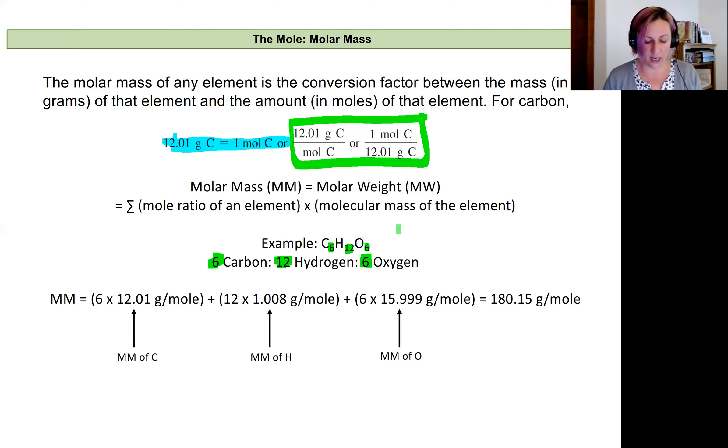So to calculate this, I would take that six and multiply it by the molar mass of carbon. Then I would take 12 and multiply that by the molar mass of hydrogen and six times the molar mass of oxygen. And those molar masses I'm just pulling off the periodic table. And then once I take those products, I'm going to sum those three together. And when I do, I get a value that's 180.15 grams per mole.